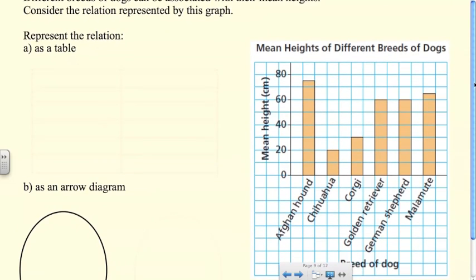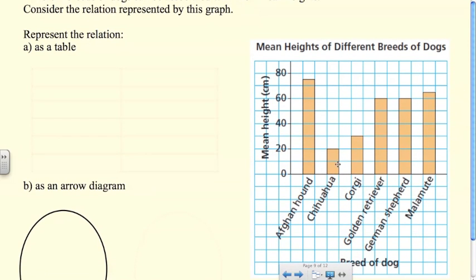Here's a similar type of question, but this time they're going to ask us to interpret this graph. This is a bar graph, another way of representing relations. Here we have breeds of dogs and up here we have mean height. Different breeds of dogs can be associated with their mean heights.